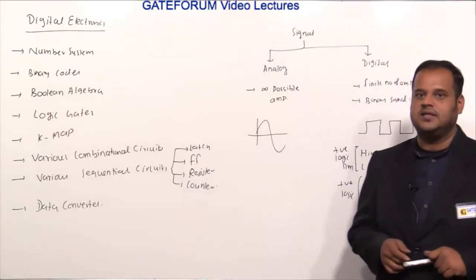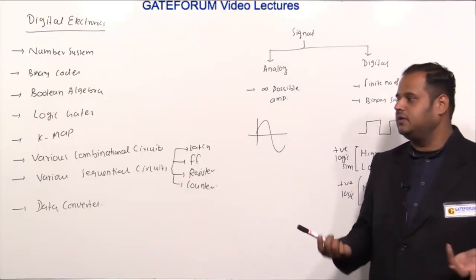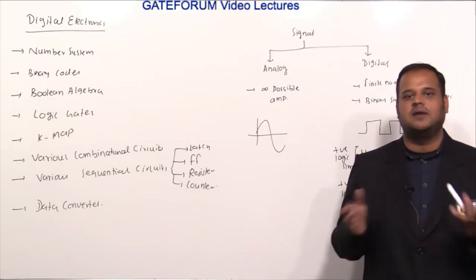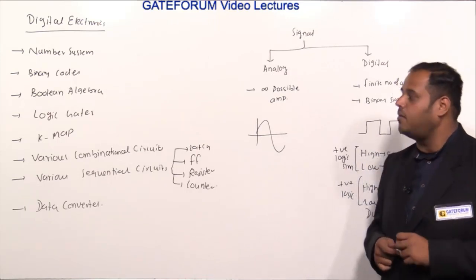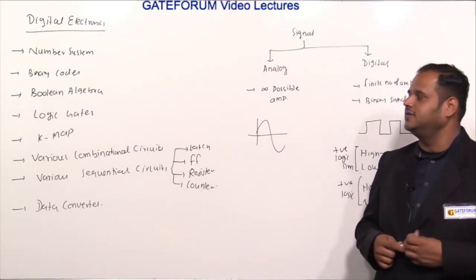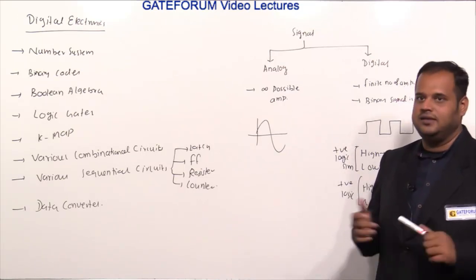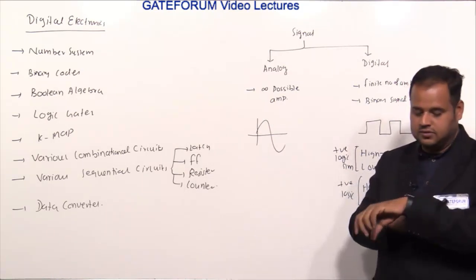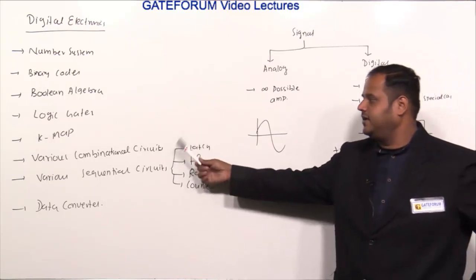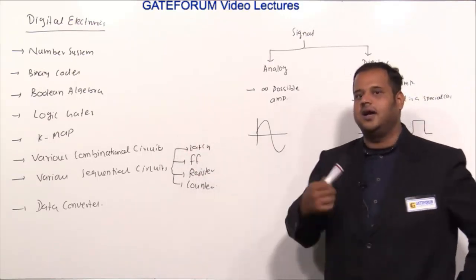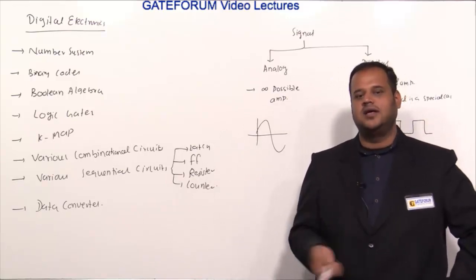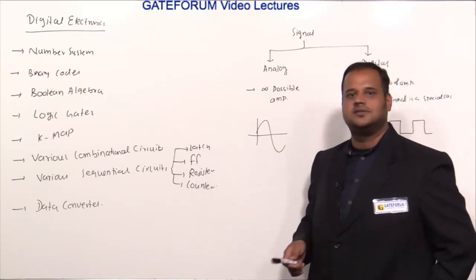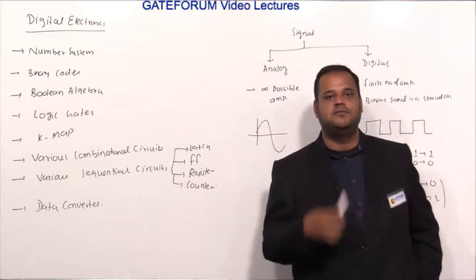Depending on the university, there are some additional topics like CMOS, multivibrators, and hazards, but as far as competitive exams like GATE or any semester exam from any university is concerned, the core syllabus will be common. Combinational circuits include around 10-12 varieties like adder, subtractor, multiplexer, demultiplexer, and decoders.